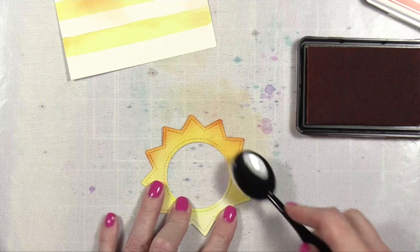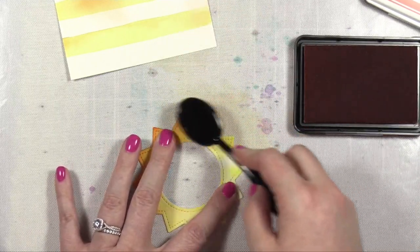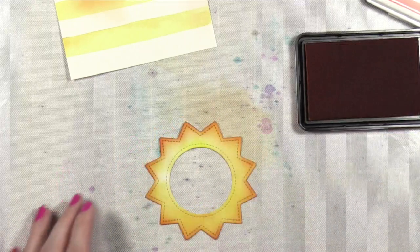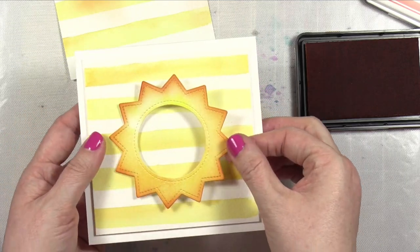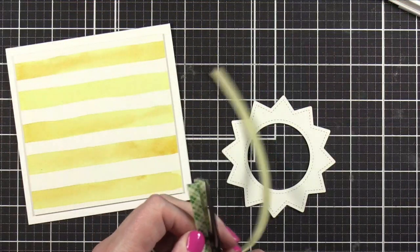I'm using a blender brush from Honey Bee, and it's going to give me just a little bit more color on those edges so that that sun shape stands out from the striped background. Gonna test it out, put that right on top. Looks great. So I'm going to move on and adhere this die cut to the front of my card.